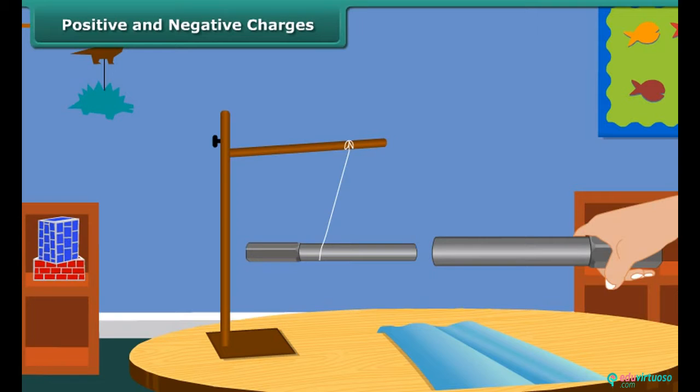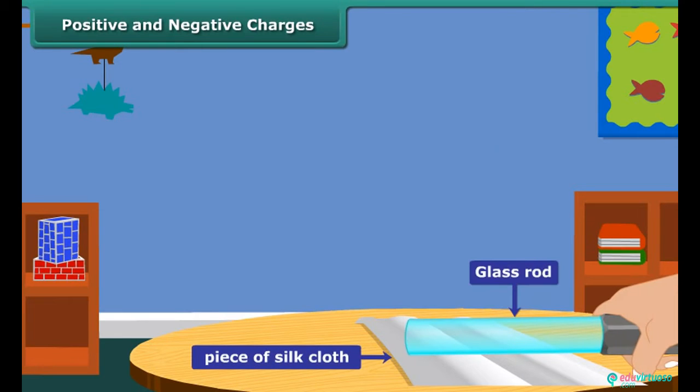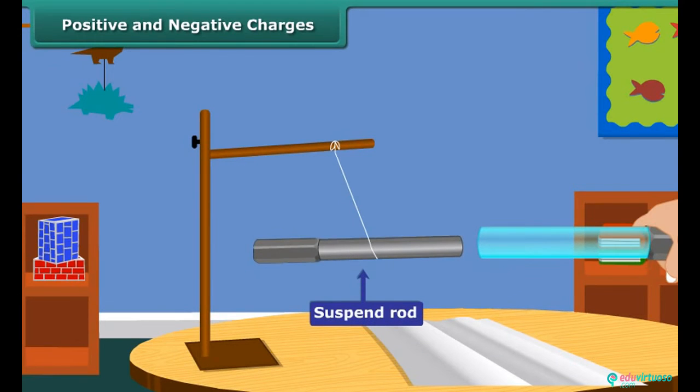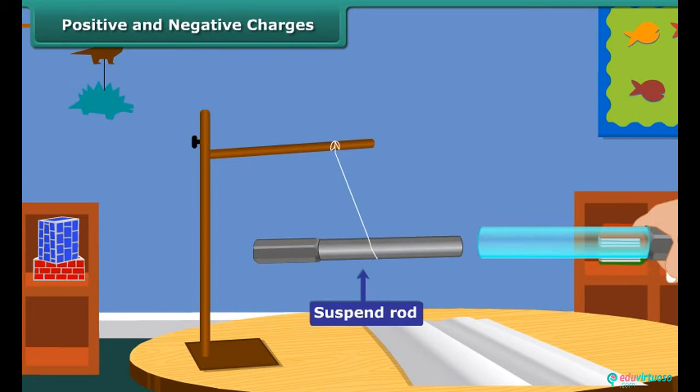What do you notice? The suspended rod moves away from the second one. Now take a glass rod and rub it with a silk cloth. Bring this glass rod close to the charged suspended ebonite rod. What do you observe now? The suspended ebonite rod comes closer to the glass rod.